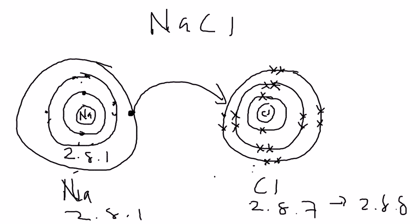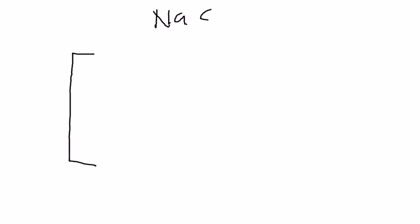That's how the ionic bonding is formed. But in order to draw a proper ionic bonding diagram, you have to draw it with a bracket. So this is the proper ionic bonding diagram for sodium chloride.